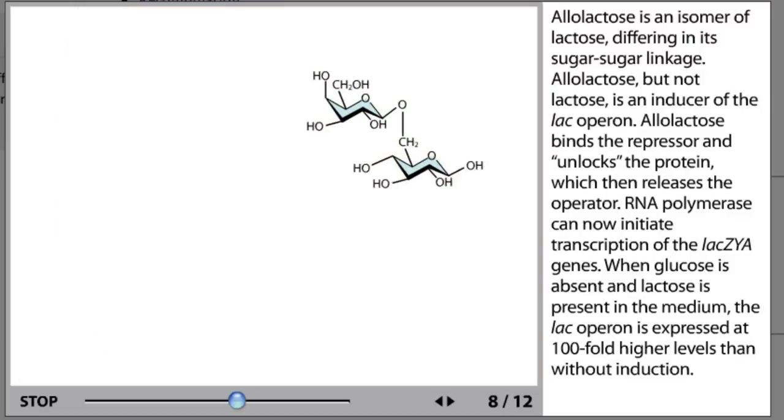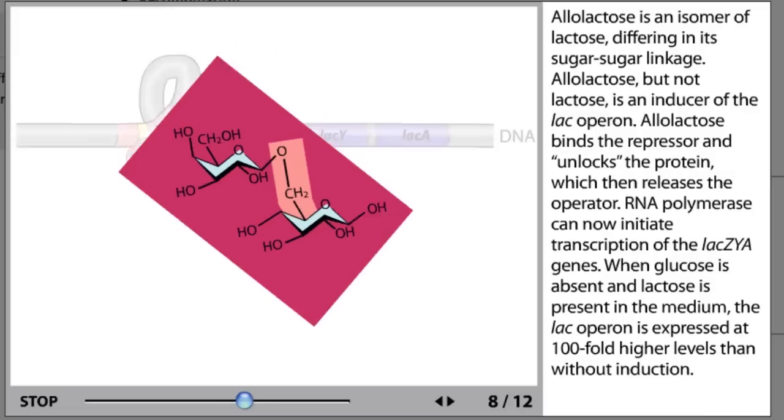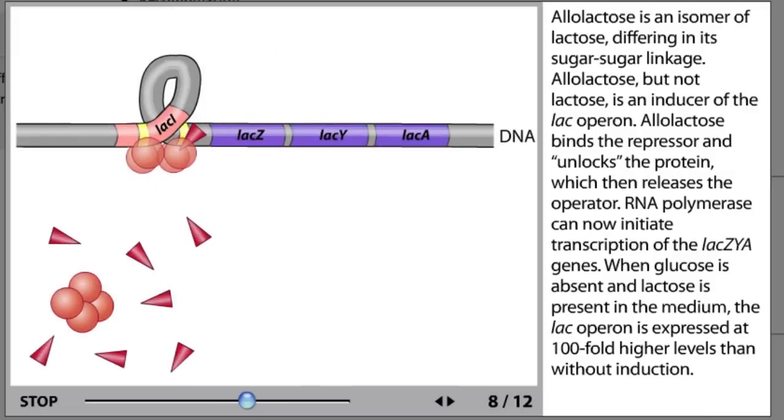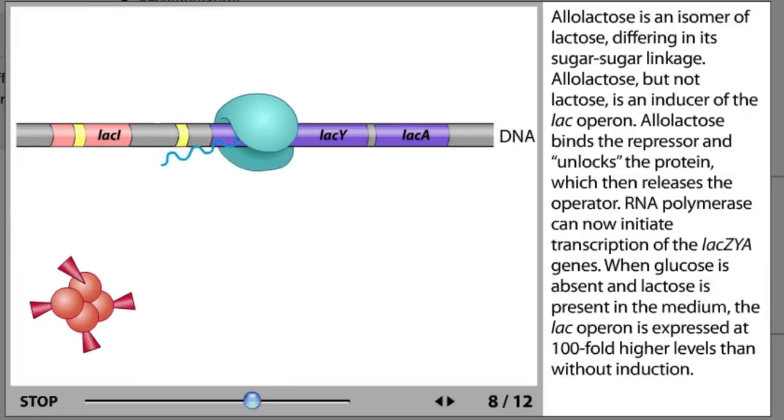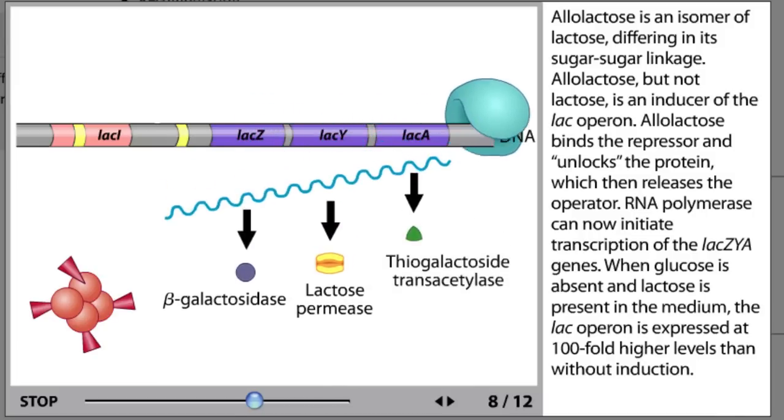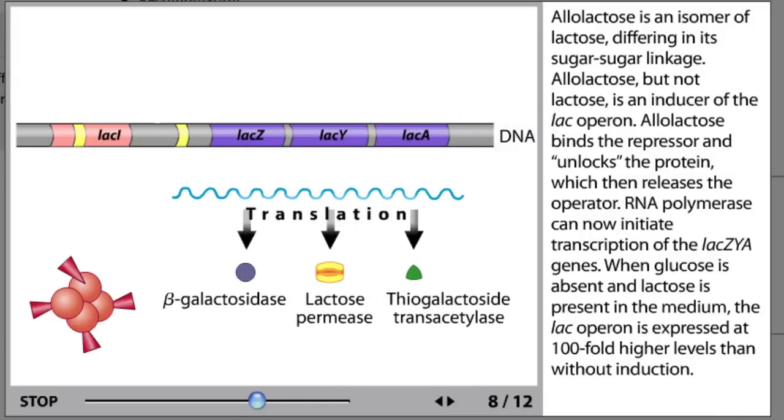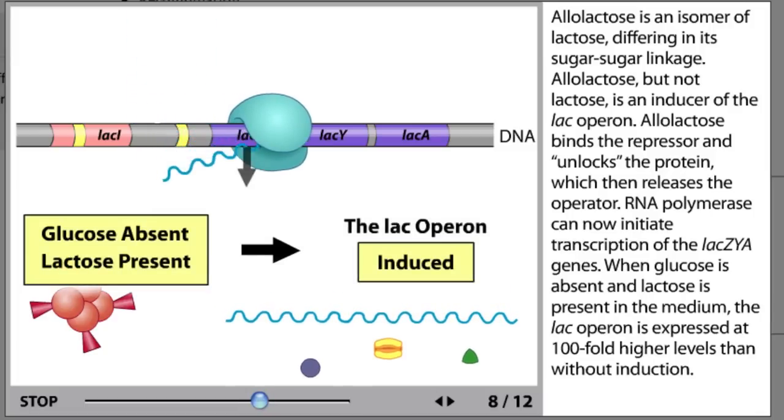Allolactose is an isomer of lactose, differing in its sugar-sugar linkage. Allolactose but not lactose is an inducer of the lac operon. Allolactose binds the repressor and unlocks the protein, which then releases the operator. RNA polymerase can now initiate transcription of the lacZYA genes. When glucose is absent and lactose is present in the medium, the lac operon is expressed at 100-fold higher levels than without induction.